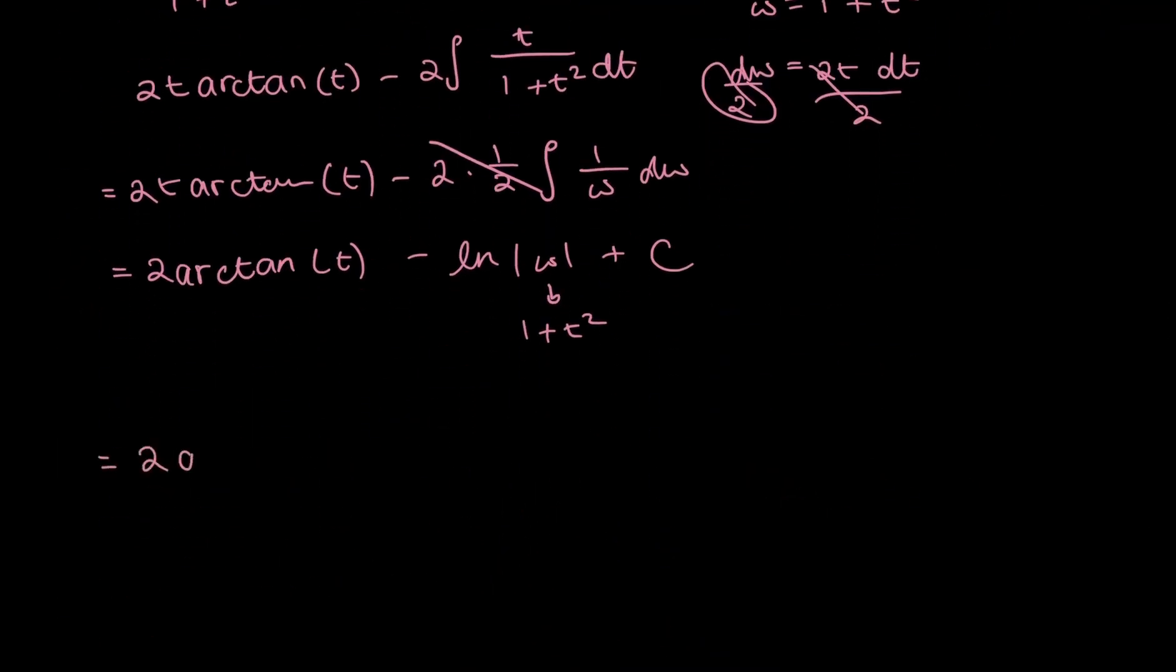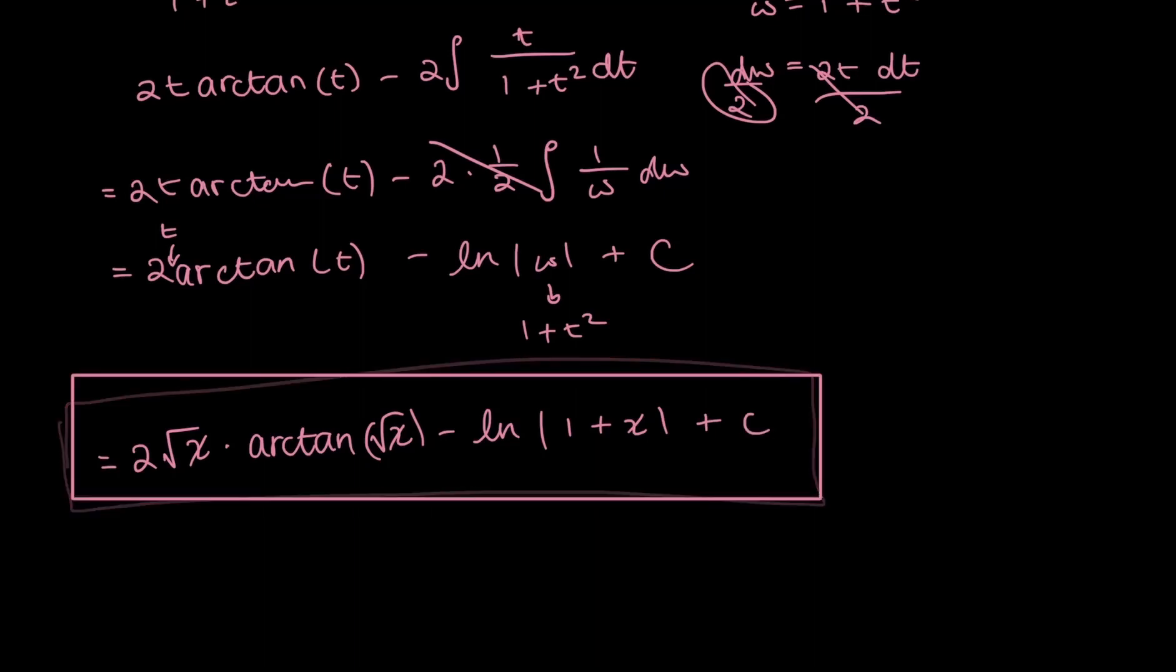So then, finally, it's 2 root x times arctan root x minus the natural log of w, which is 1 plus t squared, which is 1 plus x, because the square and the root cancel each other, right? Plus the arbitrary constant c. And that's it.